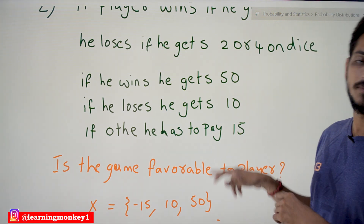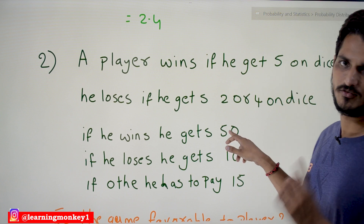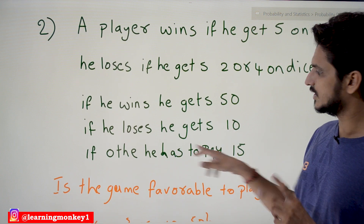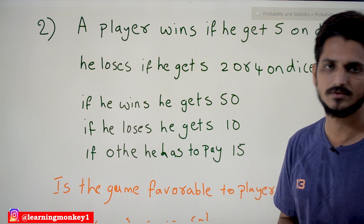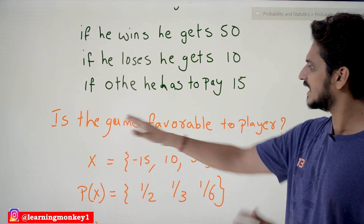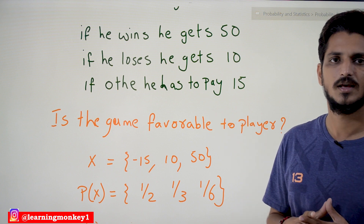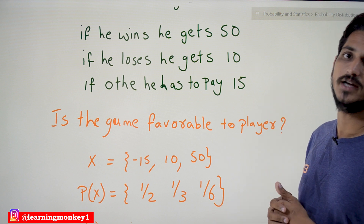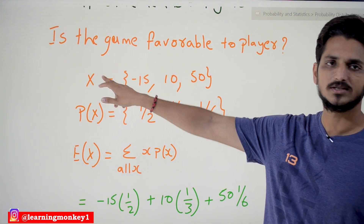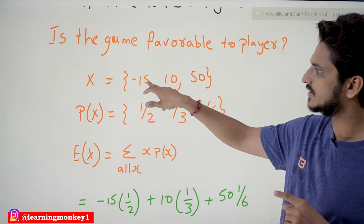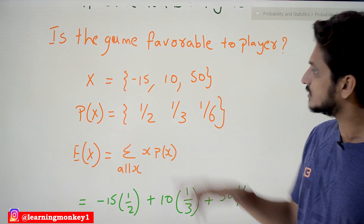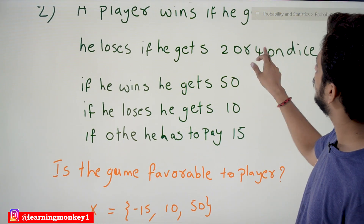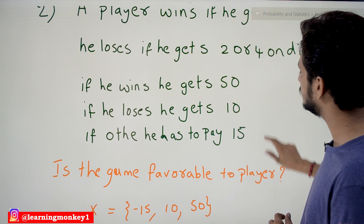So if the dice shows 5, the player gets 50 rupees. If the dice shows 2 or 4, he gets 10 rupees. For remaining values — 1, 3, or 6 — he has to pay 15 rupees. The question is: is this game favorable to the player or to the gaming department? That is what we have to identify.